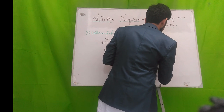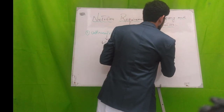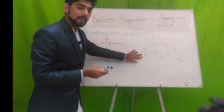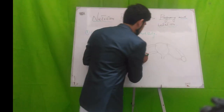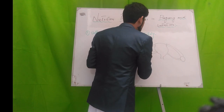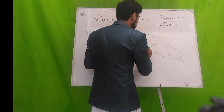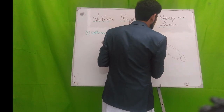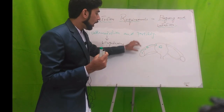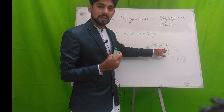Here is the uterus, fallopian tube, and ovaries. Eggs are housed in the ovaries, and when ovulation occurs, the egg moves through the fallopian tube. Fertilization occurs in the fallopian tube, and then the egg moves into the uterus. Progesterone allows the entry of the ovum through the fallopian tube into the uterus.